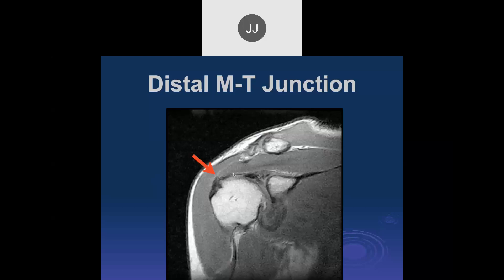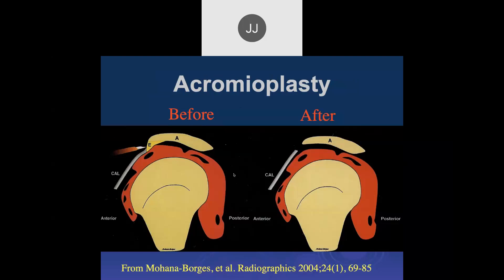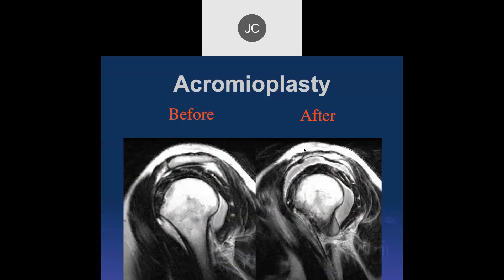Treatment for a type 3 acromion is acromioplasty, where you remove the osteophyte or abnormal anterior bone shape to relieve pressure on the supraspinatus tendon. This typically interrupts the coracoacromial ligament attachment anteriorly. What you look for post-op is reshaping of the anterior acromion. Here's an MRI before and after acromioplasty — in this case a normal coronal anatomy with a normal coracoacromial ligament insertion, though they did an acromioplasty anyway.